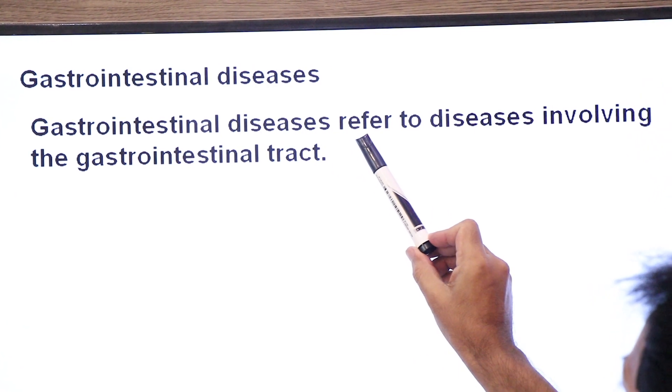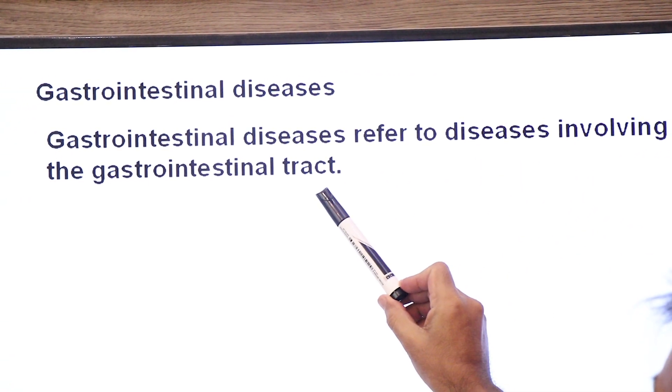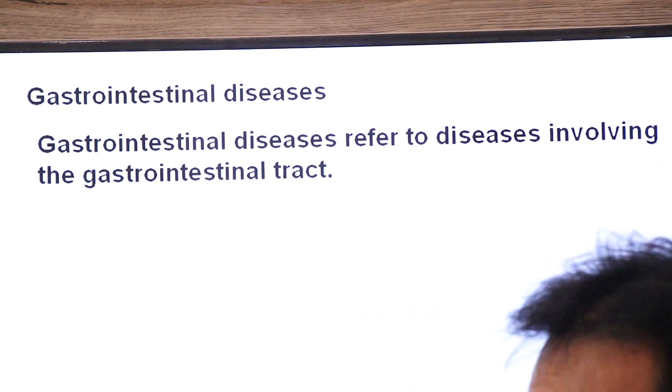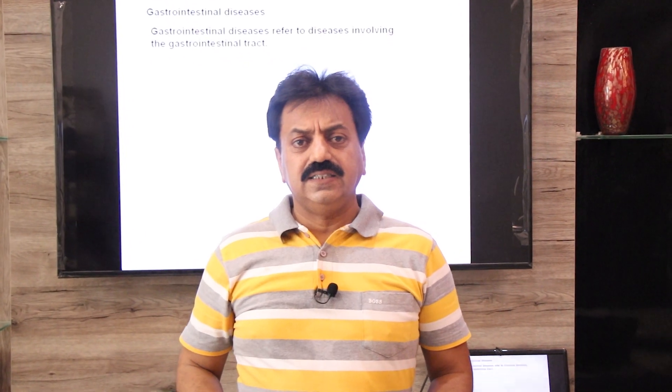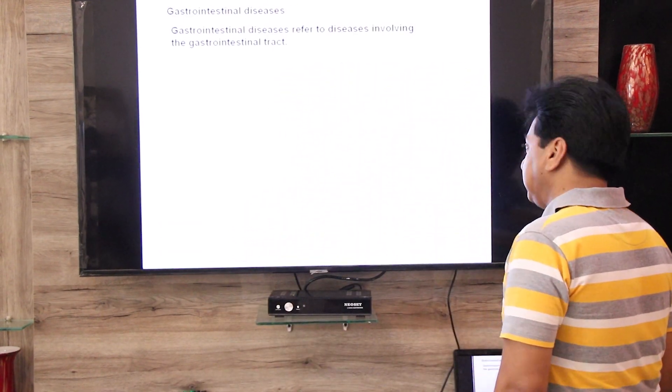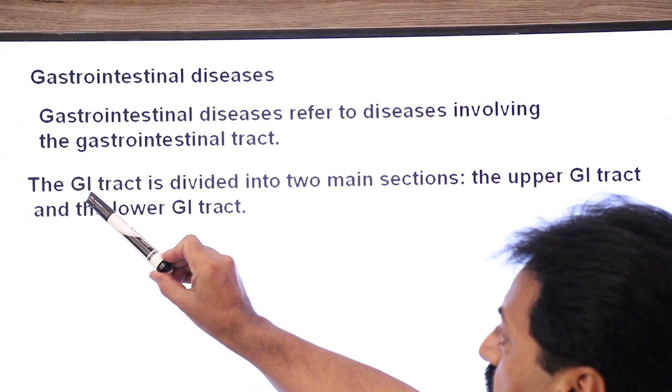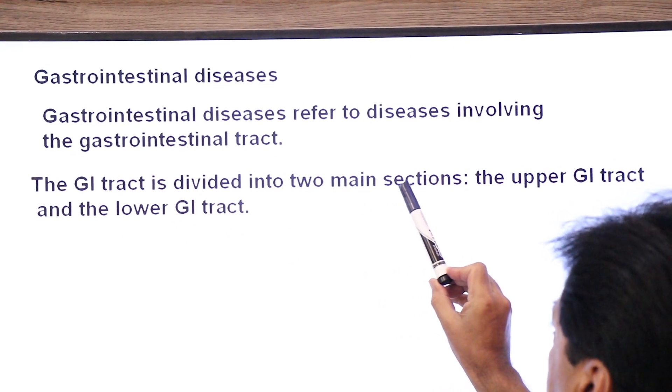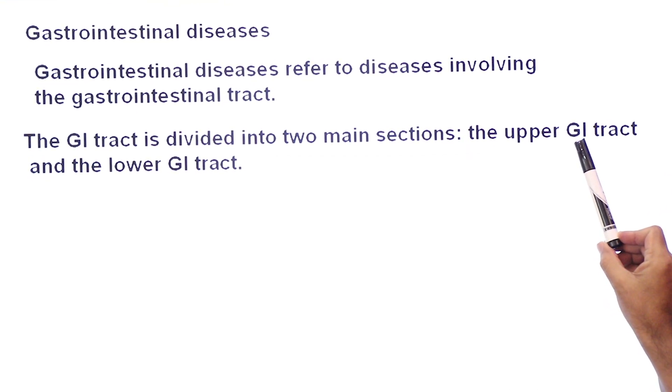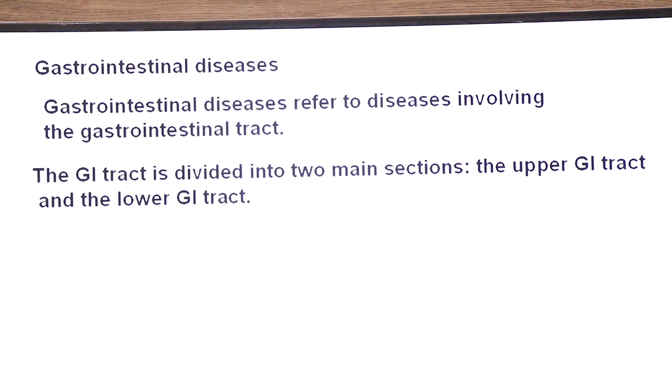Gastrointestinal diseases refers to diseases involving the gastrointestinal tract. Such diseases which are related to the gastrointestinal tract are called gastrointestinal diseases. This gastrointestinal tract is divided into two parts: the upper gastrointestinal tract and lower gastrointestinal tract.